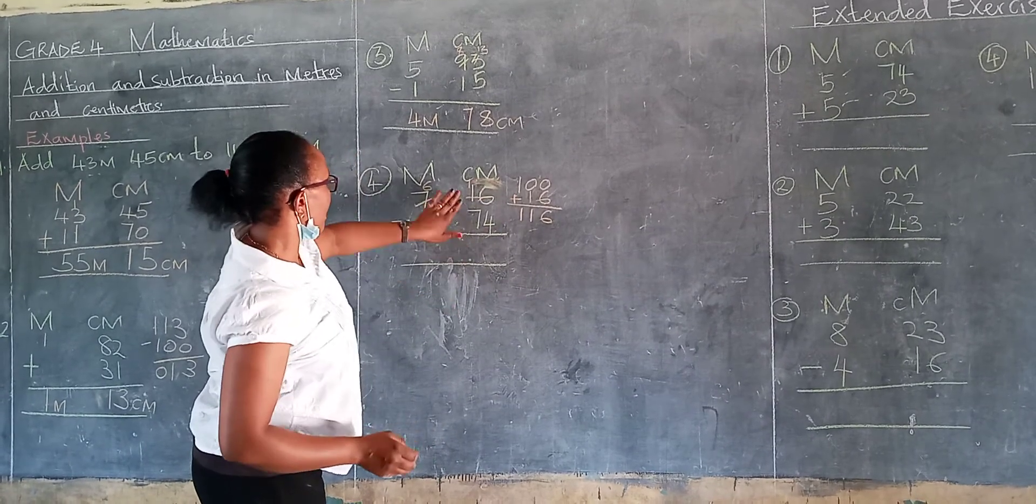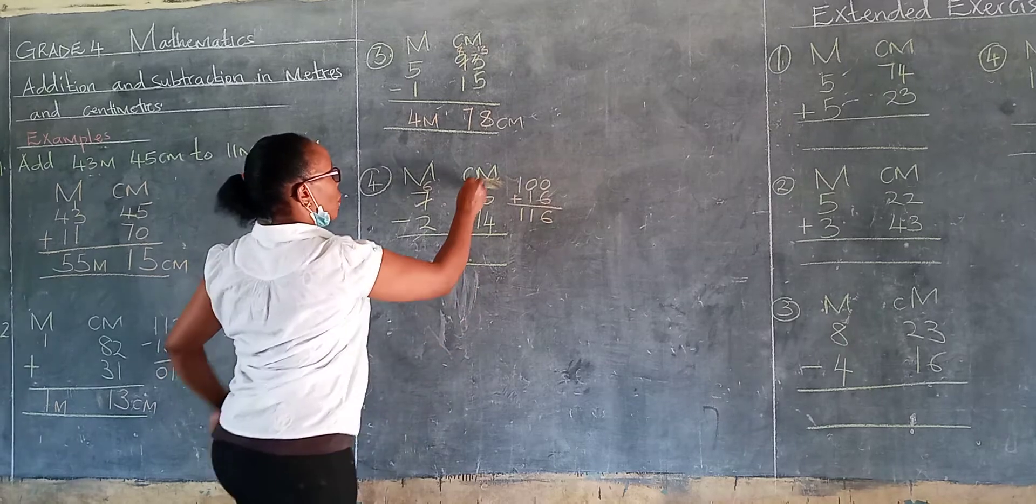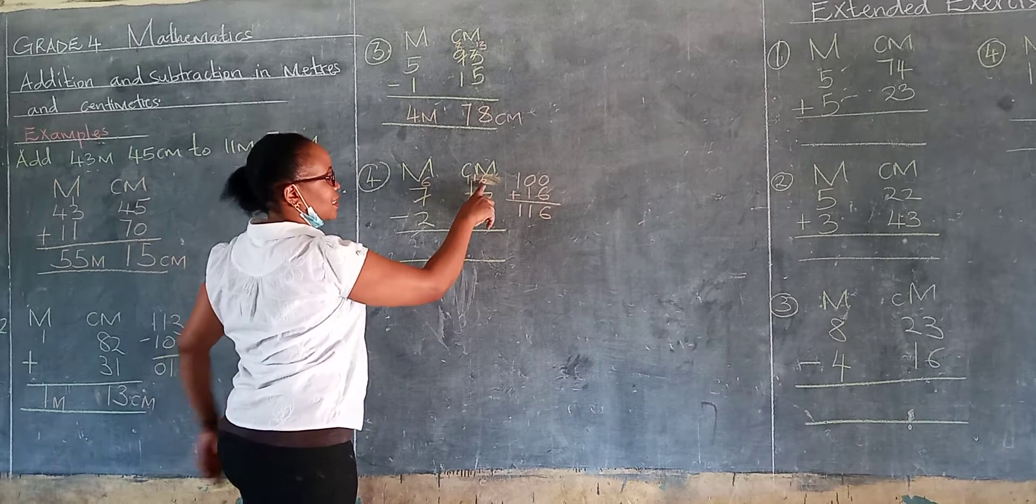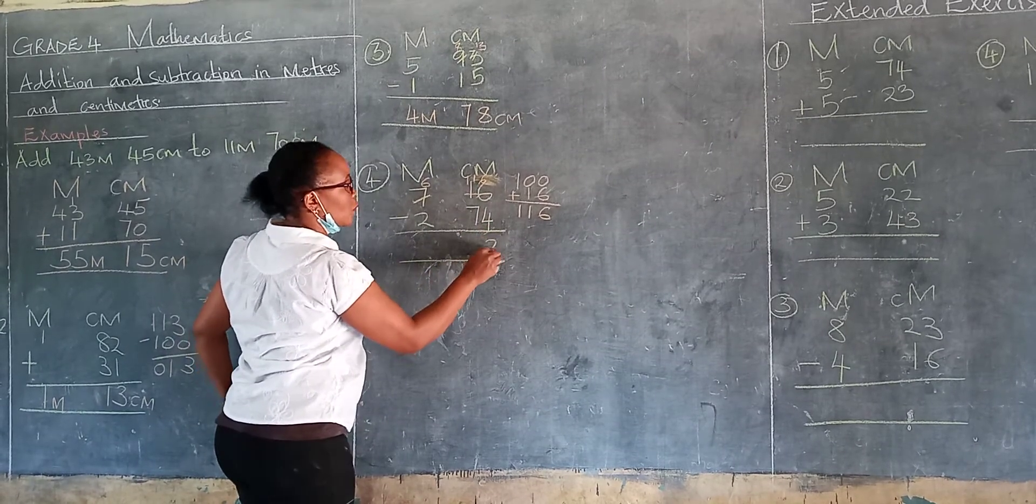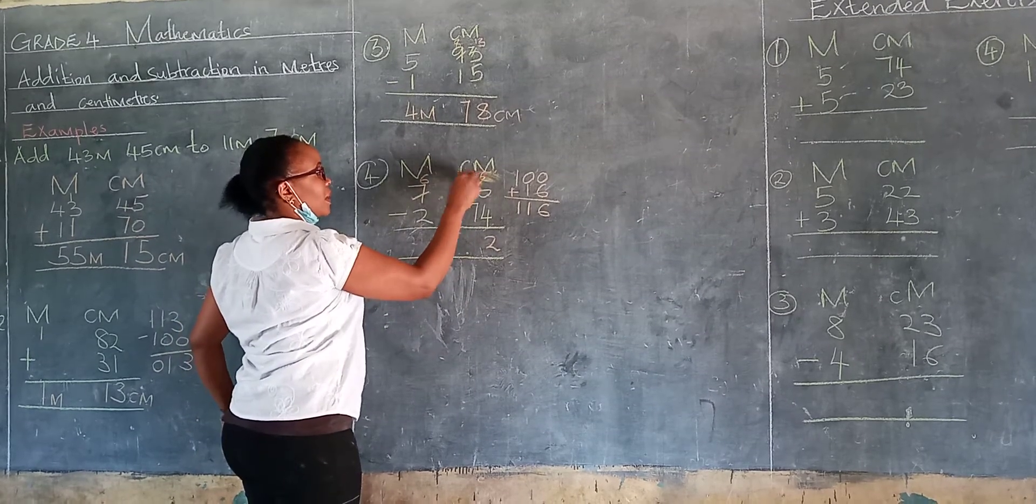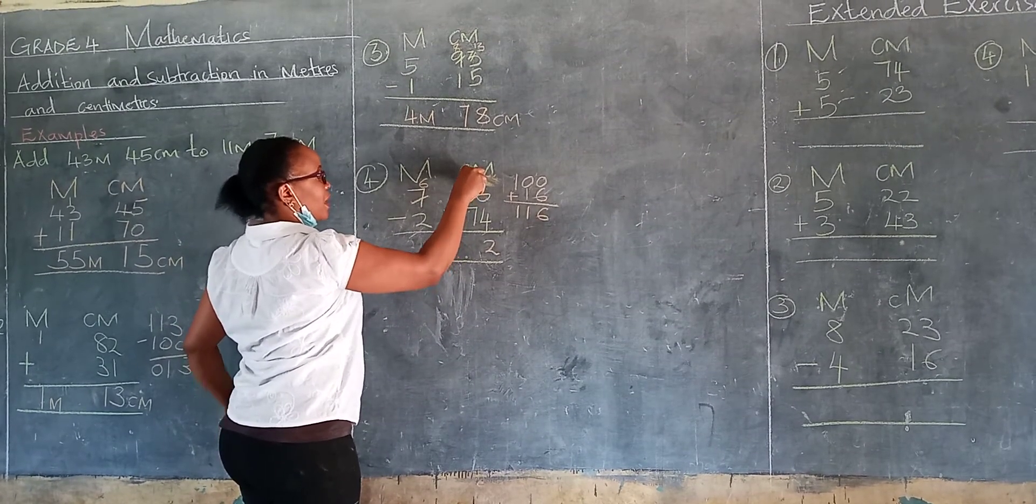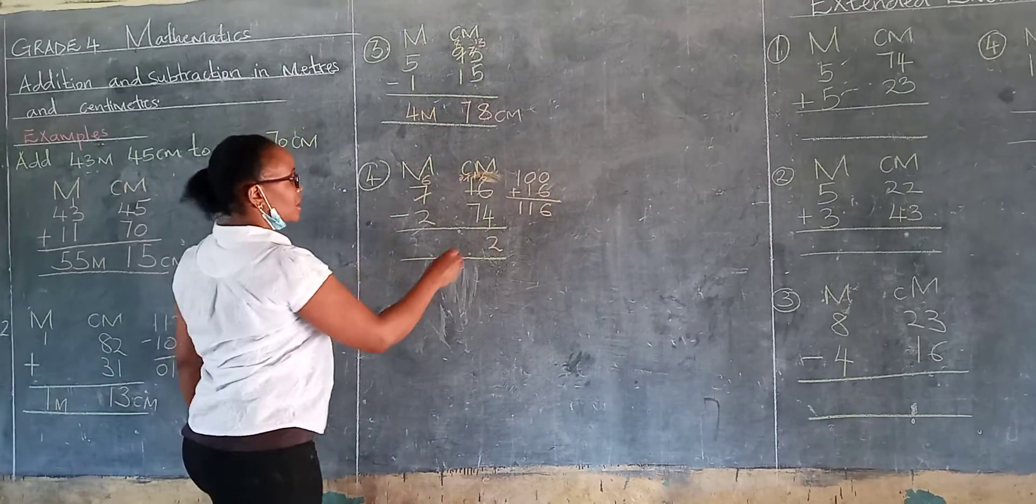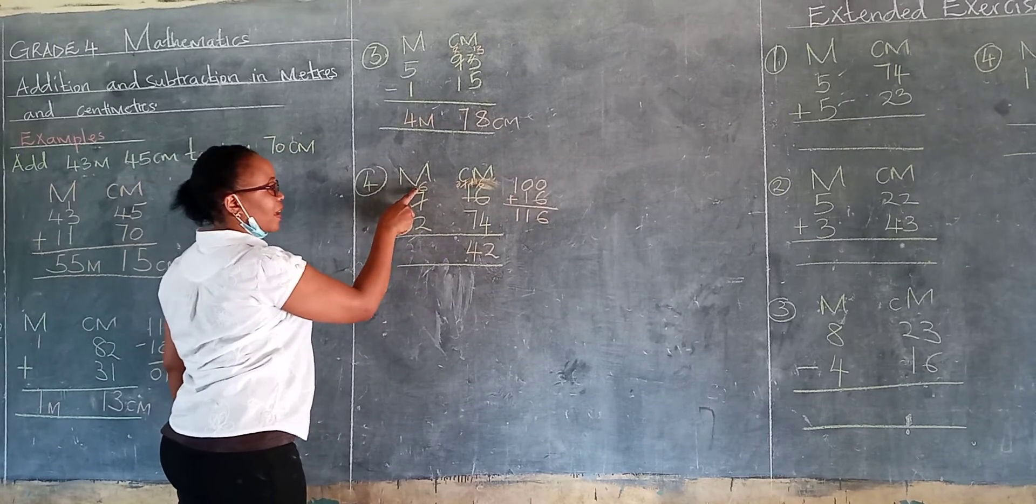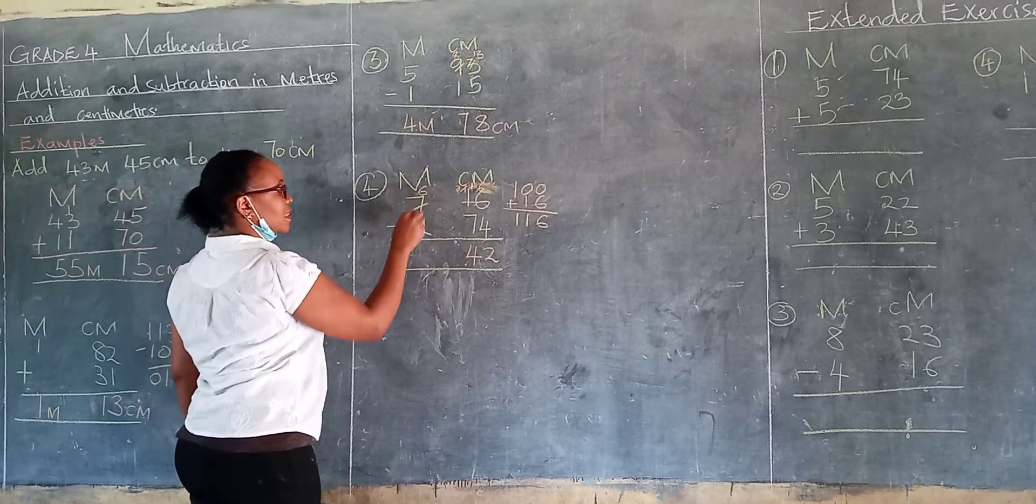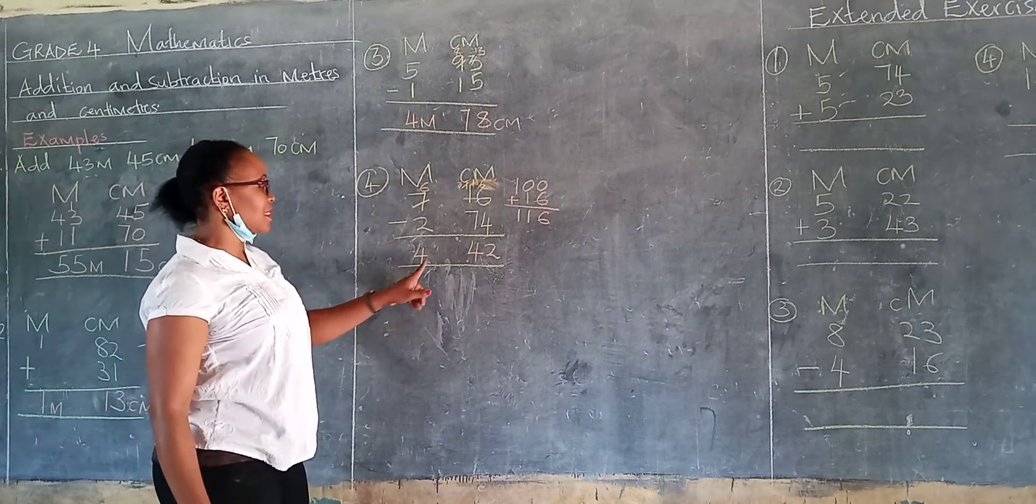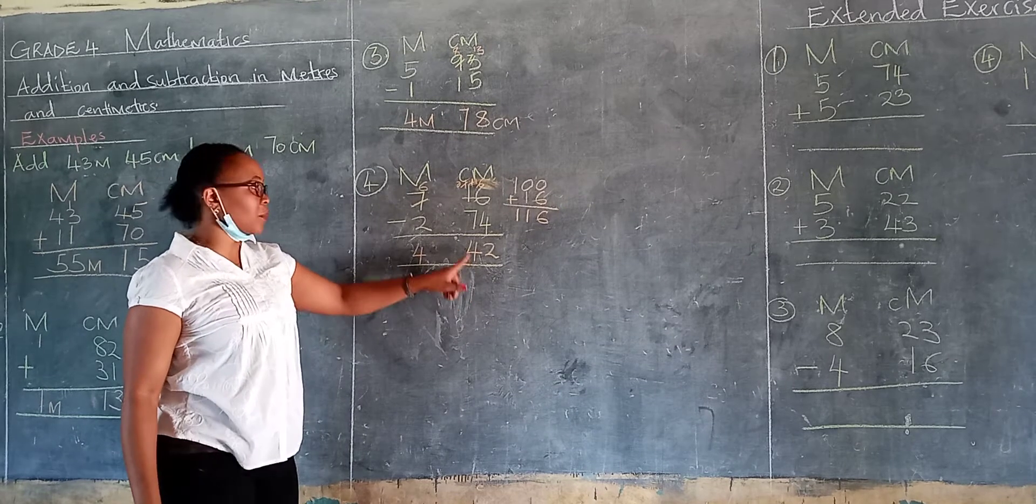Sorry. Let's repeat again. We have, we had 116. We have 6 take away 4 is 2. Then 1 take away 7 is impossible. This is 0 and this is 11. 11 take away 7, learner, is 4. So we have 42. Remember, we are left with 6 here. 6 take away 2 is 4. So our answer is 4 meters 42 centimeters.